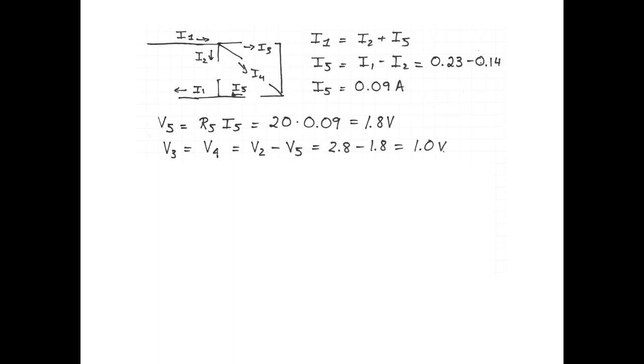All that's left is the current through these last two resistors. In both cases, we take the voltage and divide by the resistance and we get 0.05 amperes through resistor number 3 and through resistor number 4. Now, these two currents are the same only because we have two identical resistors in parallel. If R3 and R4 were different, they would still have the same voltage across them, but they would have different currents.